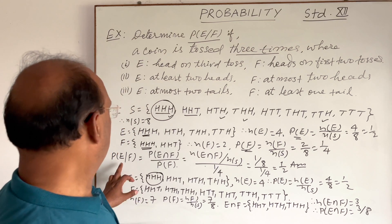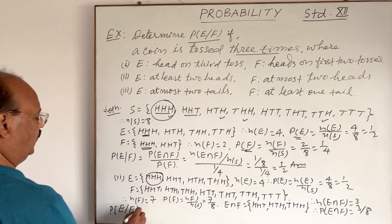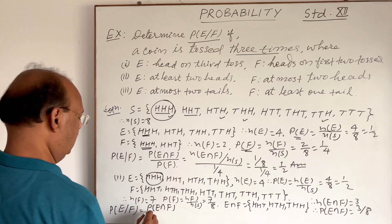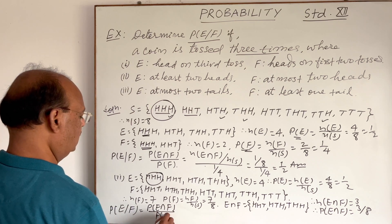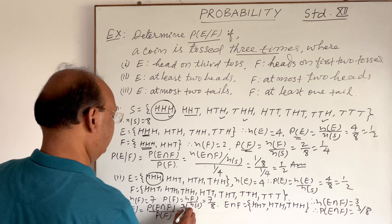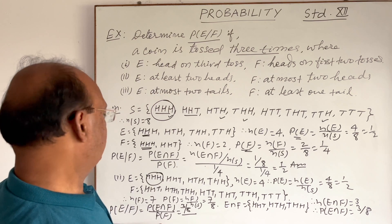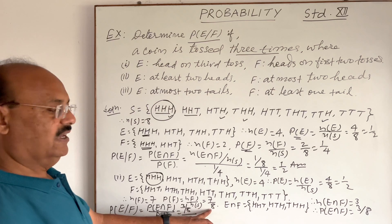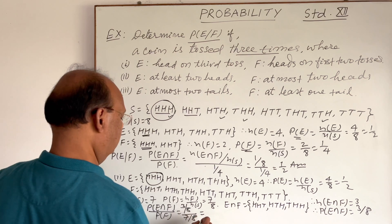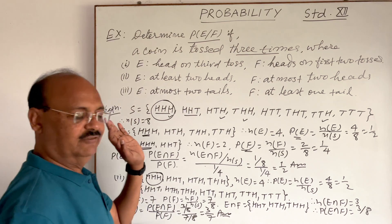Now, we have to find out probability of E condition to F. The same formula we will use here. This is probability of E intersection F divided by probability of F. And we have got this probability of E intersection F here, that is three by eight. This is three by eight divided by probability of F, which is seven by eight. After simplifying it, we are getting this is equal to three by seven. So this is the answer of this second part. Very simple and interesting.